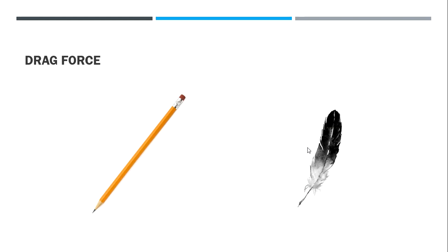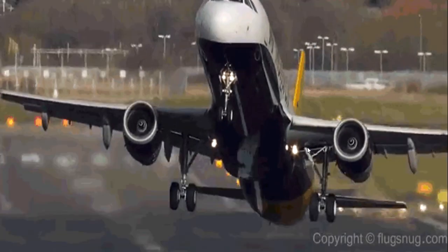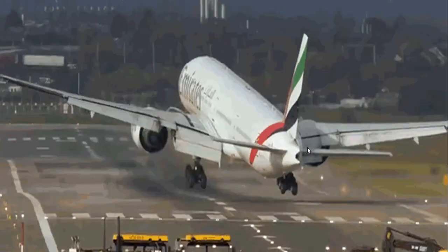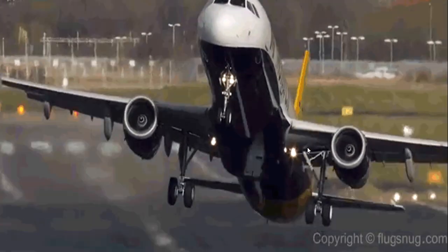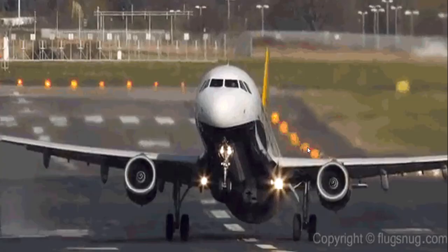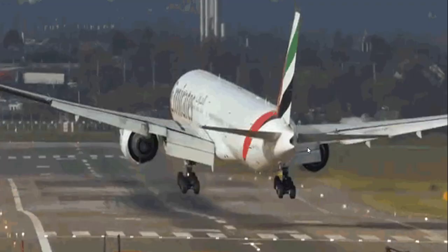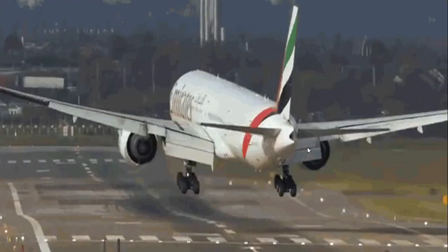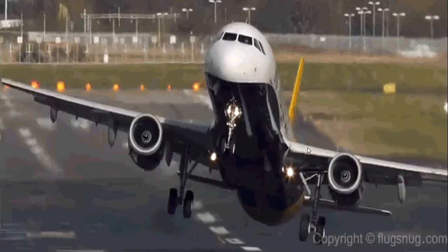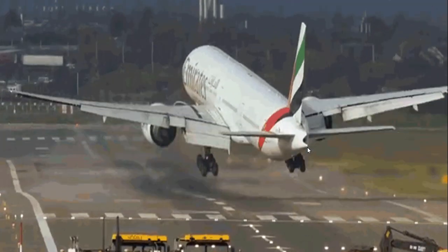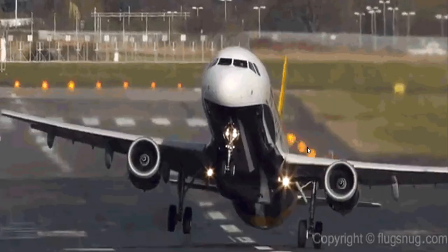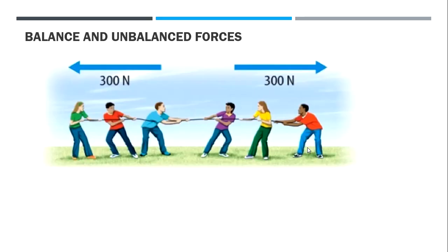That's why airplanes mostly try not to land in the wind direction, because the drag force would be too great and there would be too little air resistance to control the landing safely.